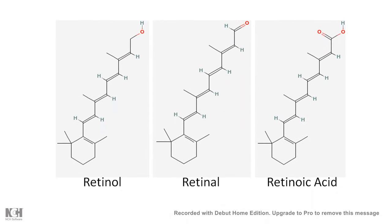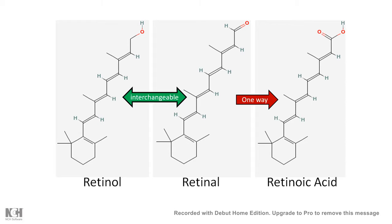Vitamin A can be inter-converted into different formats. Retinol and retinal interchange with each other, and from retinol it is a one-way conversion to retinoic acid. Retinoic acid is a super important signaling molecule, important for several physiological processes, which we would not talk about in this video.